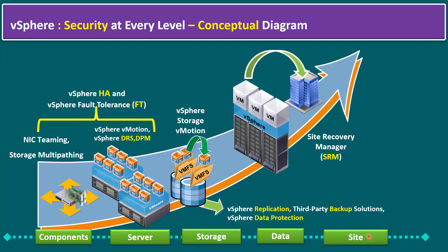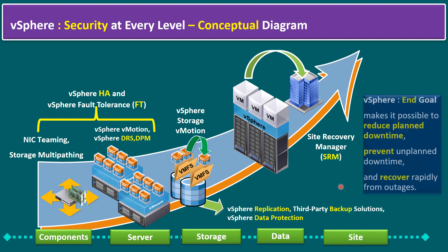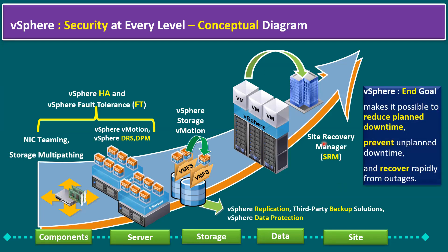When it comes to site-level protection, if an entire site experiences a disaster, we should maintain disaster recovery tools. One VMware tool is SRM — Site Recovery Manager — so that if a primary site has any disaster or outage, it can be recovered and accessed from a secondary site. We can also use Zerto, Cohesity, or CommVault for site recovery management. The end goal of the vSphere platform is to reduce planned downtime, prevent unplanned downtime, and recover rapidly from outages.